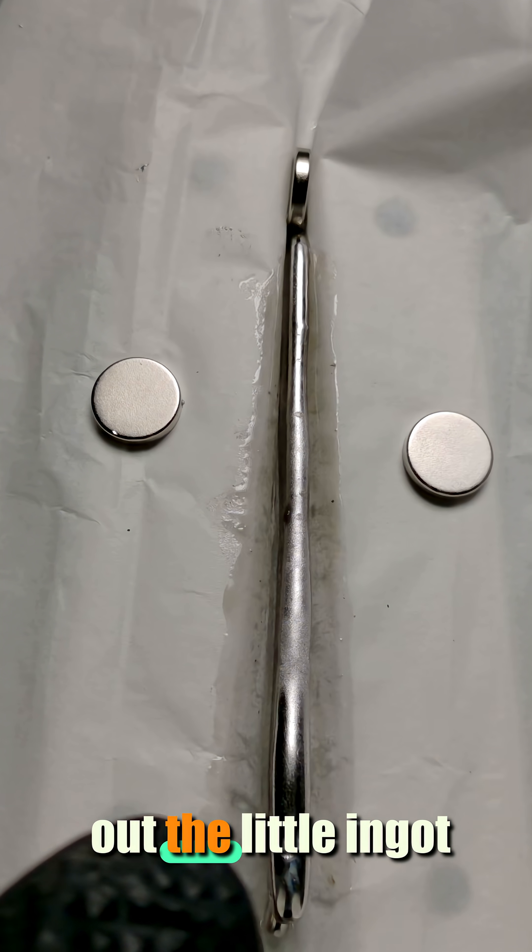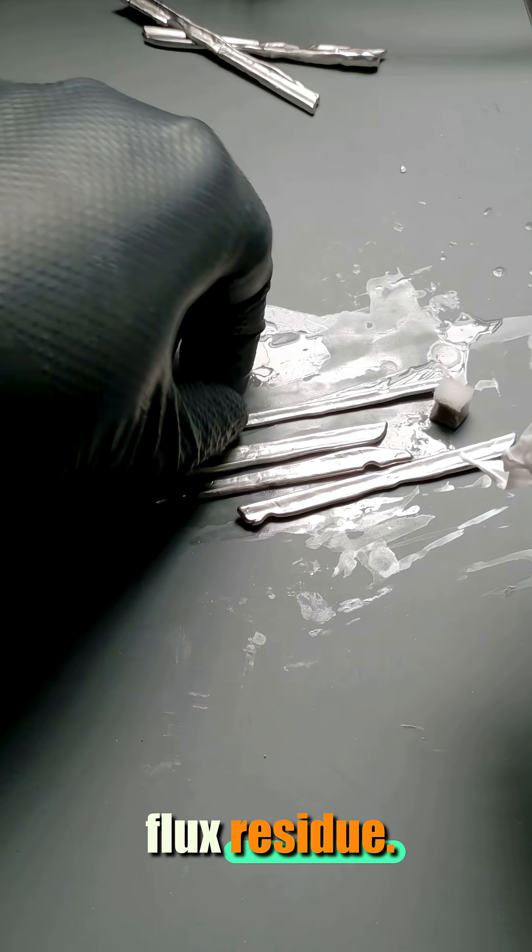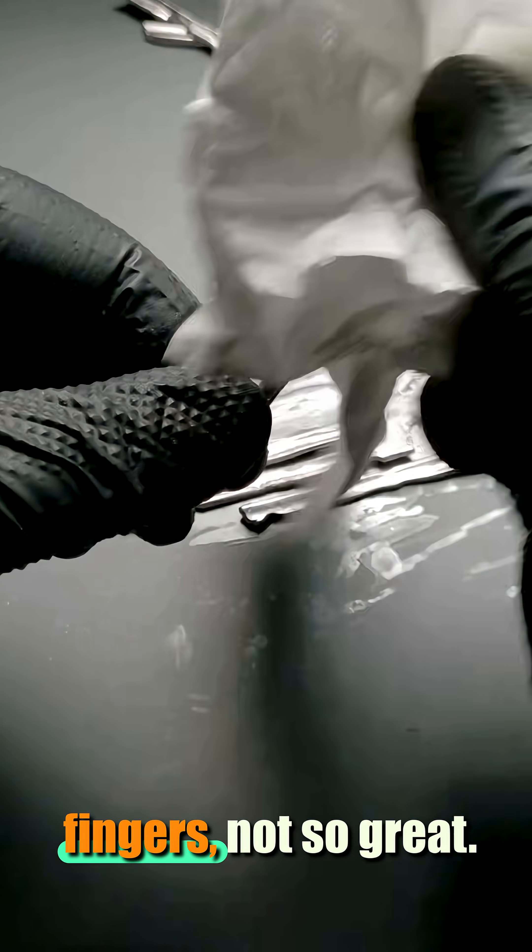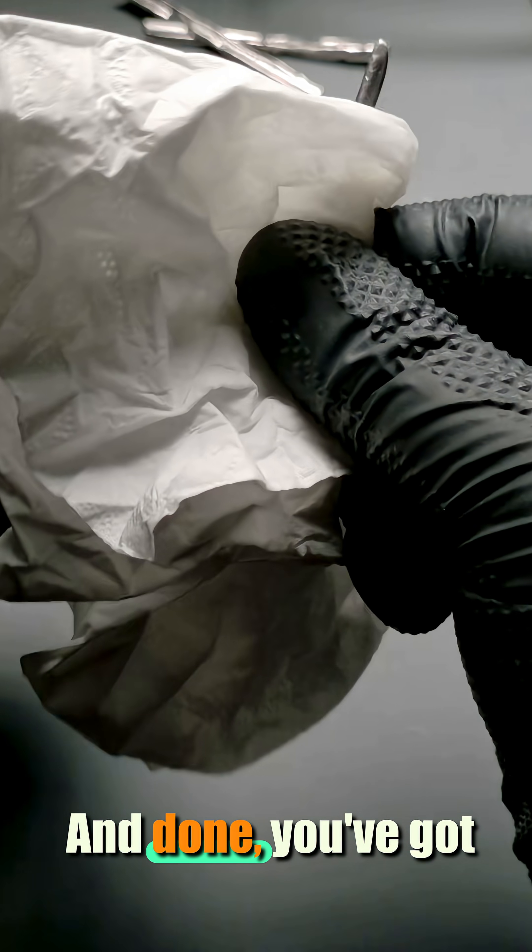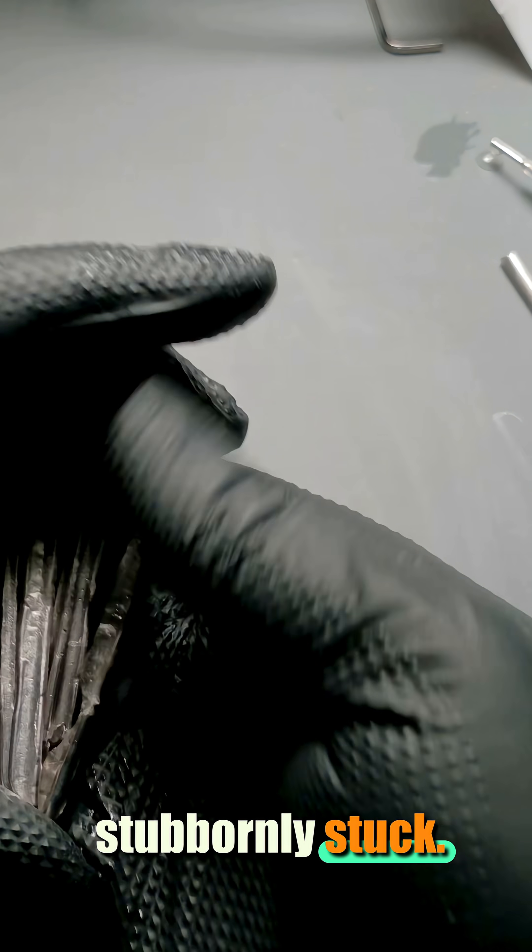After casting, you pull out the little ingot and let it cool down. Pro tip, clean off the flux residue, otherwise you'll have sticky fingers, not so great. And done, you've got your own magic solder. With this, you can really desolder anything that's stubbornly stuck.